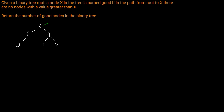We have to go into its left and right subtrees. Going into the left subtree, we go into node 1. We've seen the node with value 3, so along this path there is a node that is greater than the current node's value — so this is not a good node. Then we go into the 3, and we notice that we've seen a 3, but it's only good if there's no value greater than X. So 3 is actually a good node because we haven't seen anything with a value greater than 3.